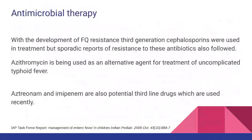Third-generation cephalosporins are now the most commonly used first-line antibiotics, though sporadic reports of resistance exist. Azithromycin can be used as an alternative for uncomplicated typhoid fever. Aztreonam and imipenem are reserved as potential third-line drugs for cases of resistance to cephalosporins.